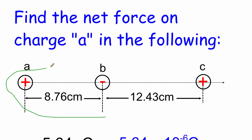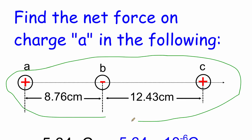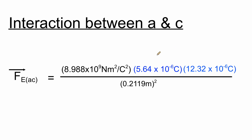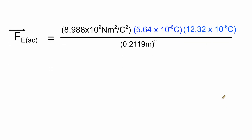Now we're going to look at the interaction between A and C. C is positively charged and A is positively charged, which means C is going to be pushing A towards the left. The distance of separation is 8.76 centimeters plus 12.43 centimeters. We apply Coulomb's constant times the charge on A times the charge on C, with the distance of separation 0.2119 meters squared.